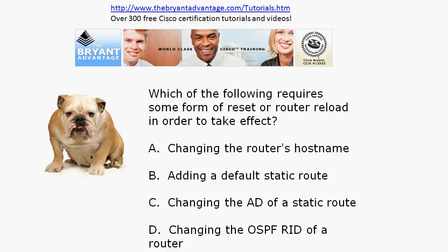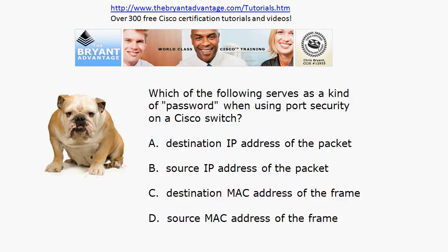For question two, going top to bottom: you don't need to reset anything when you change a router hostname, add a default static route, or change the administrative distance of a static route. But changing the OSPF Router ID does require action — you either have to reload the router or clear your IP OSPF process. Either way, your adjacencies will drop, so it's definitely not something you want to do on a production network. That's the only one of the four requiring a router reload.